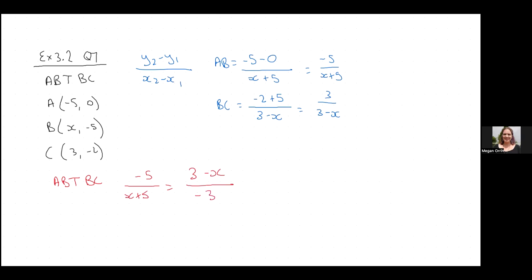You can either make the top negative or the bottom negative, but you can't do both, right, because that's like multiplying by negative 1 twice. So just pick one. It doesn't matter if you change the top or the bottom, you'll still get the right answer.